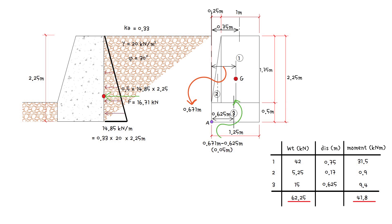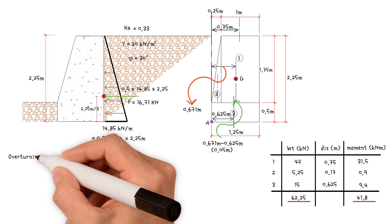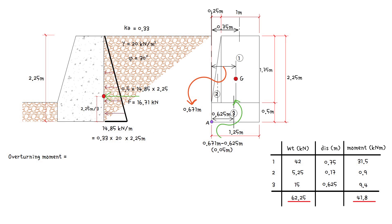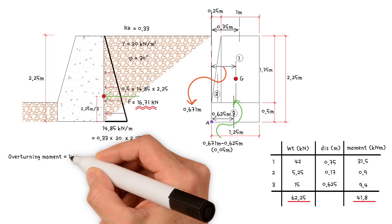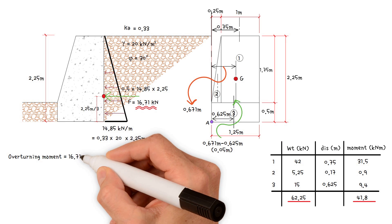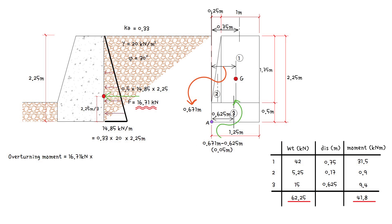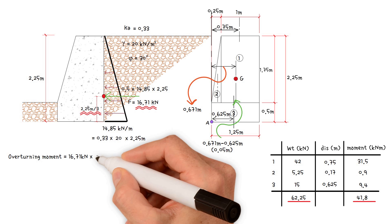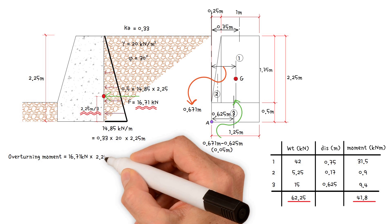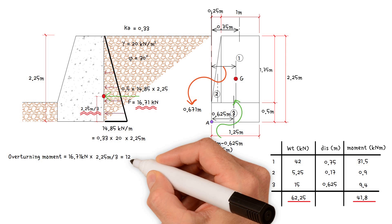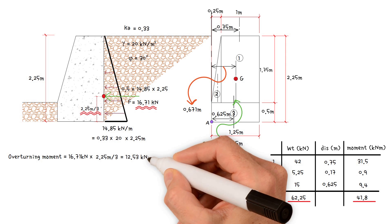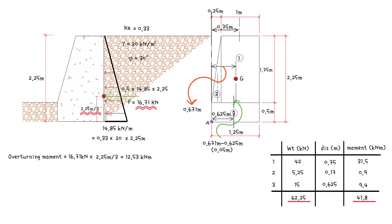As a result, the overturning moment equals the resultant force 16.71 kilonewtons times the height 2.25 meters divided by 3, which gives a value of 12.53 kilonewton-meters.